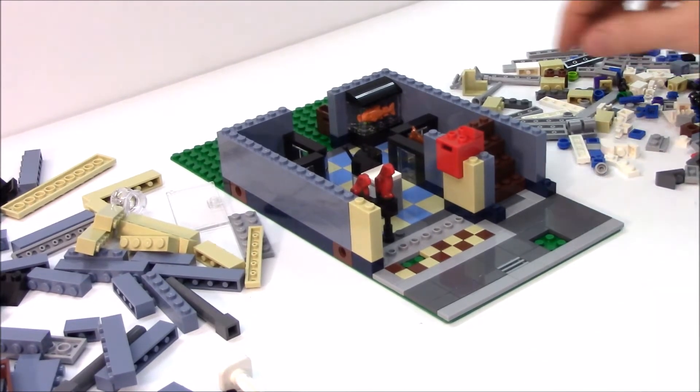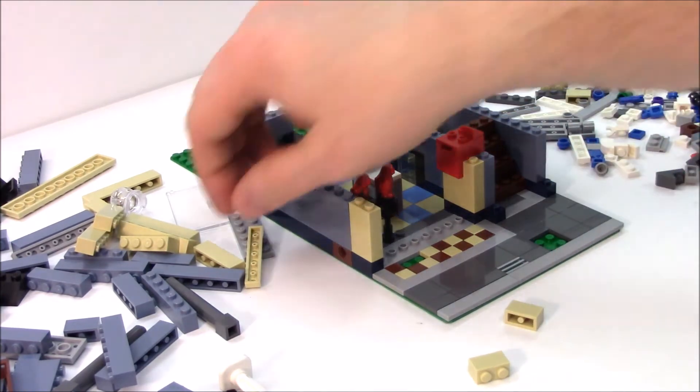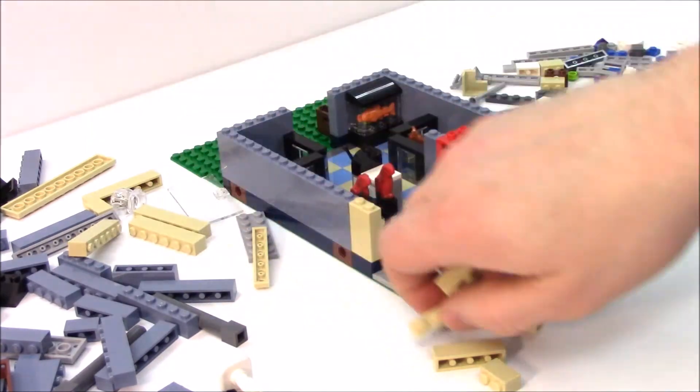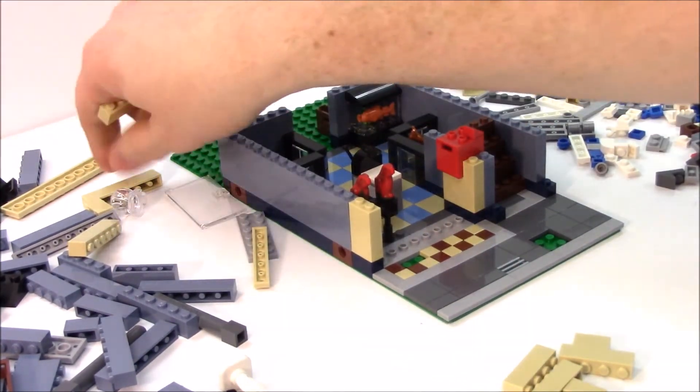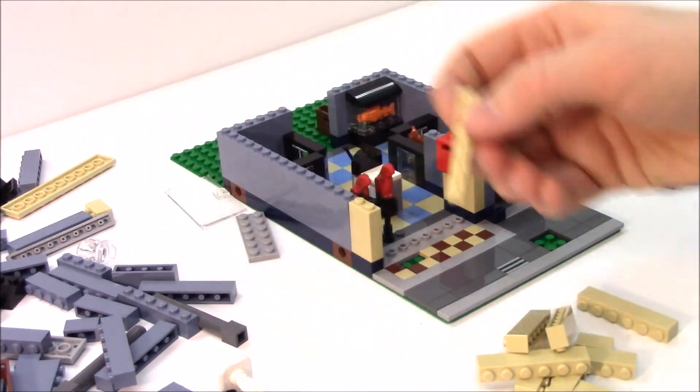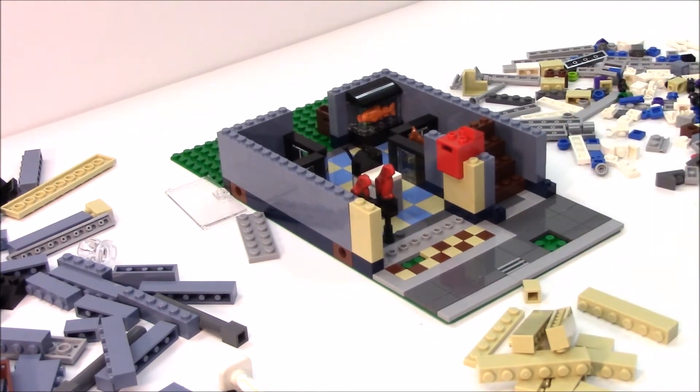And now we pick our 1x4 brown, and that's the next step up to the second level, probably. Good deal. Three more 1x1 blues. Three 1x4s. Those are over here. There's three. One 1x6. And a 1x2 tan, and a 1x1 tan. There we go.